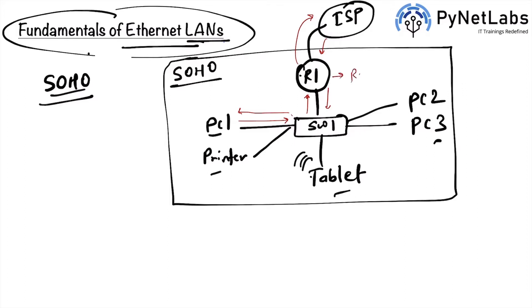The key components here are a router, a switch — one of the most important devices — and endpoints, also called nodes. We have five nodes connected to a centralized switch. We use a switch because it's a smart device that lets you connect multiple devices in the same network segment, allowing many endpoints to communicate with each other.